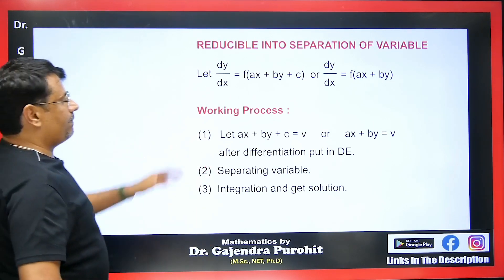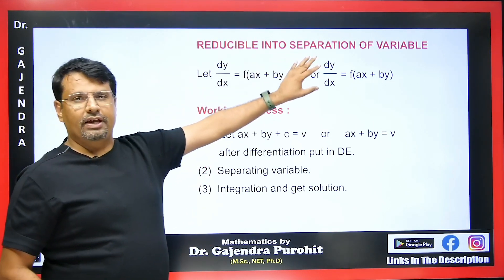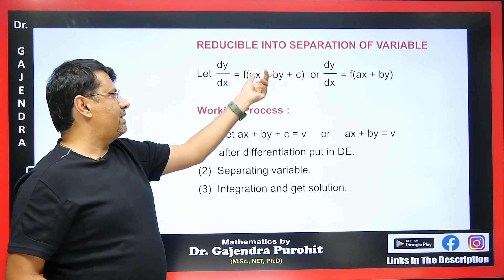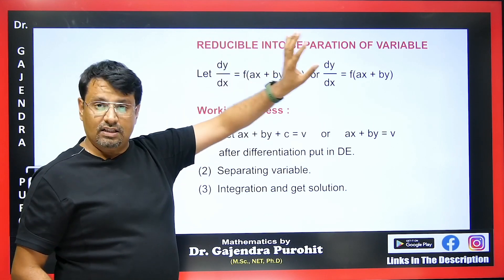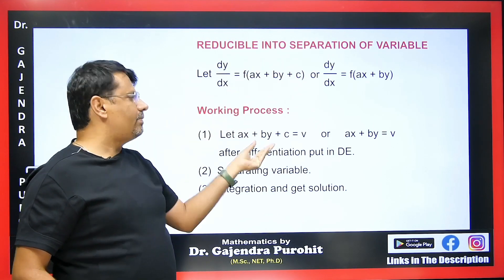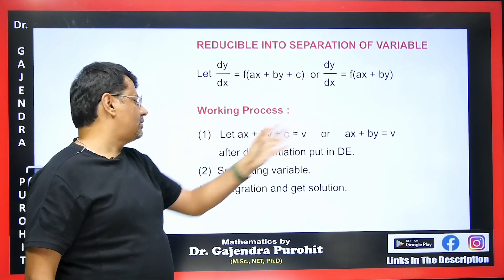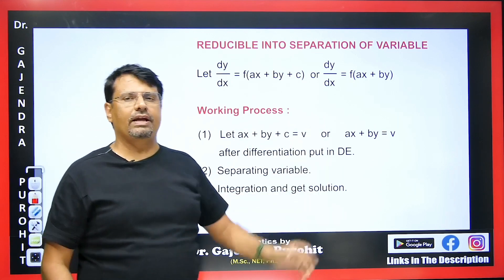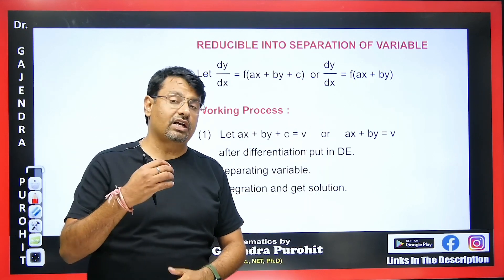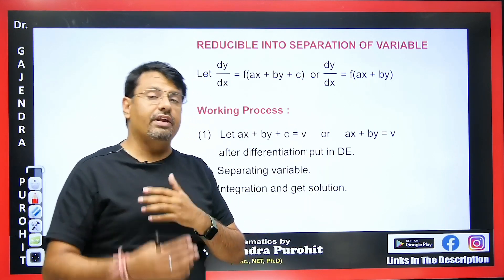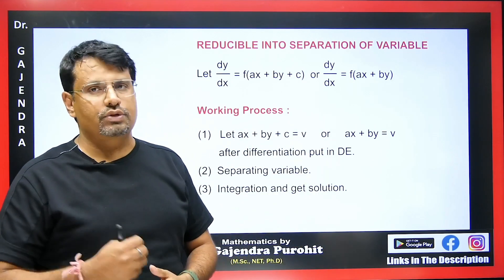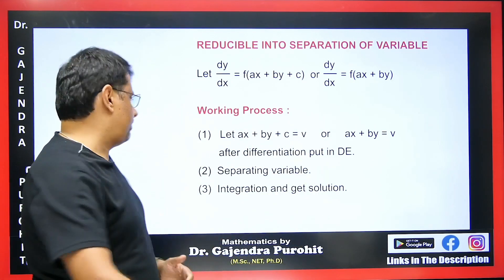We have a defined working procedure: any function that appears once or multiple times will be assumed as v or t, whichever you prefer. Then we will proceed to solve the equation, and this will be reduced to variable separable form.